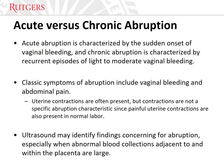Acute abruption is characterized by the sudden onset of vaginal bleeding, and chronic abruption is characterized by recurrent episodes of light-to-moderate bleeding. The clinical manifestations of abruption are influenced by the caliber and location of maternal decidual vessels as well as the chronicity of the bleeding. Classic symptoms include vaginal bleeding and abdominal pain. Uterine contractions are often present, but are not a specific abruption characteristic since painful contractions are also present in normal labor. Although there is potential for bleeding from fetal sources, associated vaginal bleeding is typically of maternal origin. Ultimately, abruption is a clinical diagnosis.